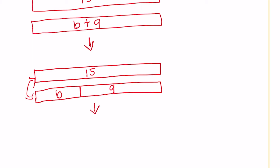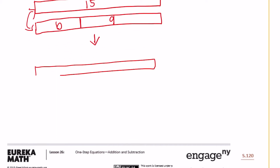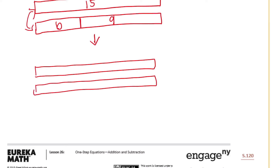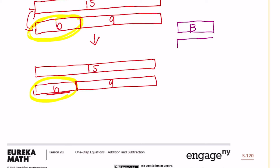Let's take it one more step further and draw two more tape diagrams. Again, we have 15, and then instead of b, I'm going to see: 9 plus what missing piece gets us to 15? That would be 6, which actually looks like a b, so it's a bit confusing. But the point is to show that b is equal to 6 — they are the same piece. So b equals 6.